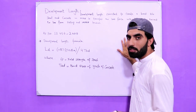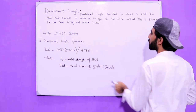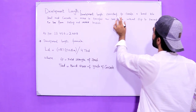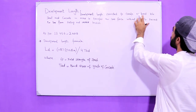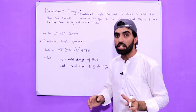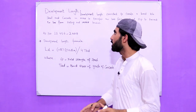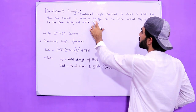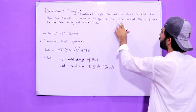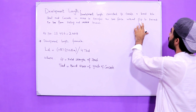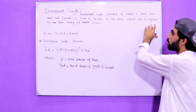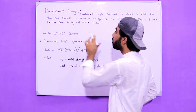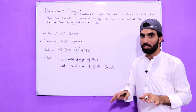What is development length? First of all, I will define it. Development length is provided to create a bond between steel and concrete in order to transfer the bar force without slip, and to prevent the bar from pulling out under tension.